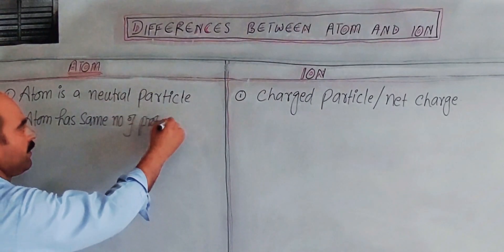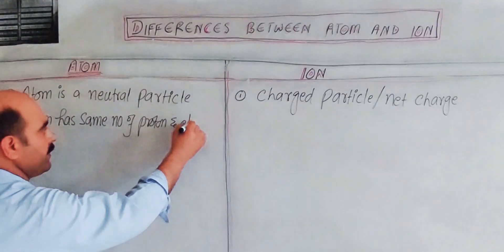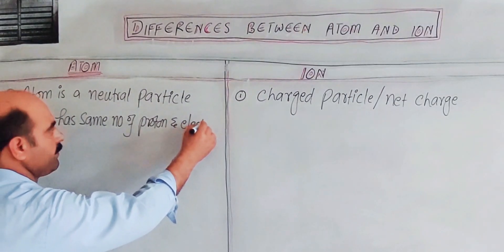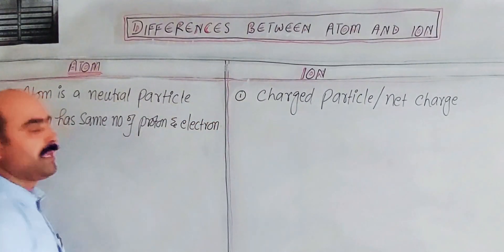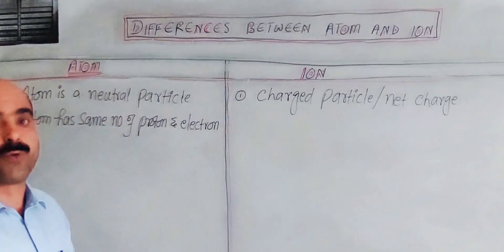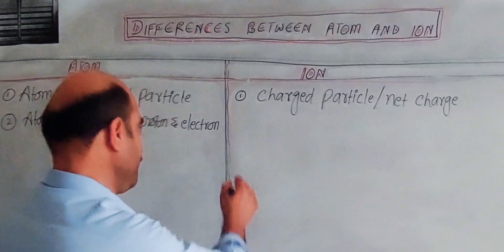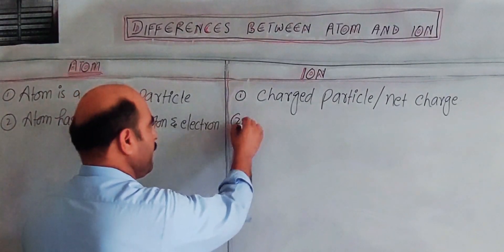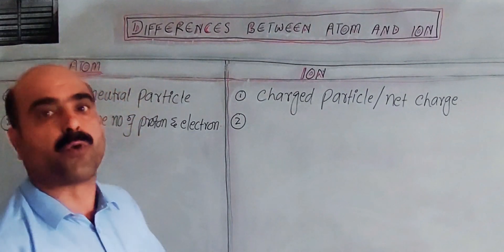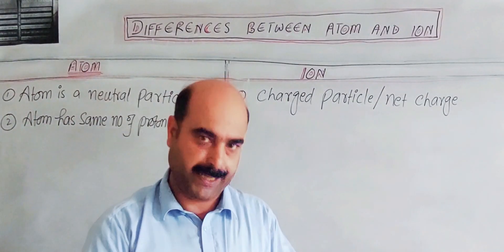In an atom, the number of electrons and protons is equal. The electron count and proton count are the same, so they balance each other out and the atom carries no net charge.